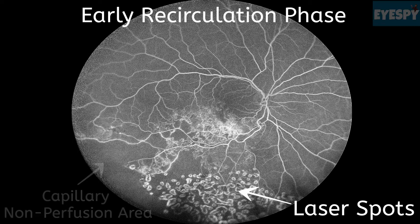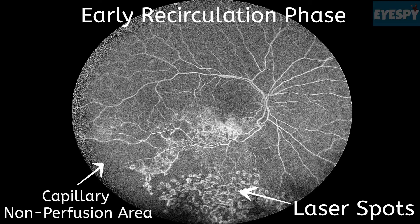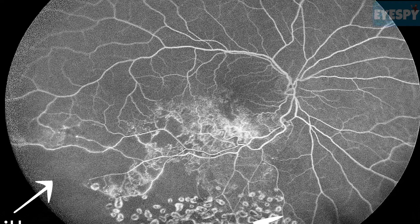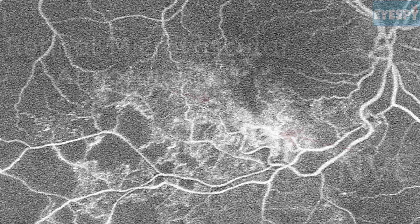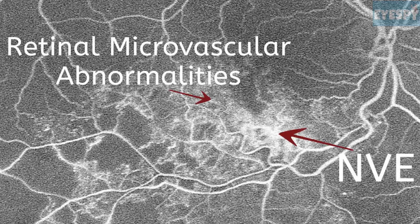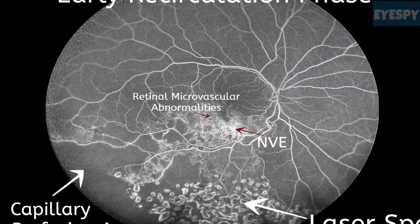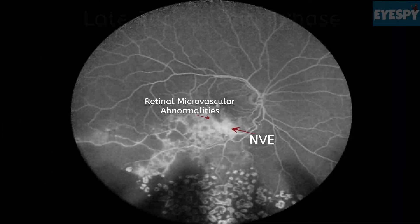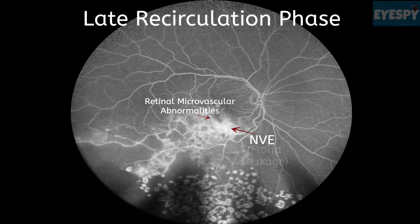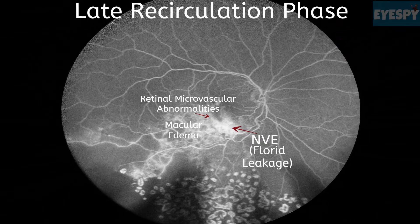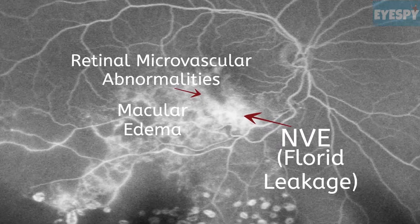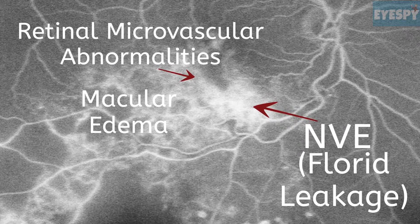In the early recirculation phase, capillary non-perfusion area is evident along with retinal microvascular abnormalities and neovascularization. Neovascularization elsewhere (NVE) shows fluorescein leakage of dye, and these microvascular abnormalities lead to macular edema.